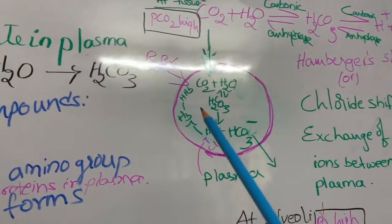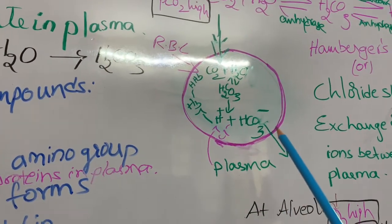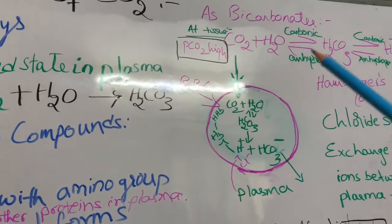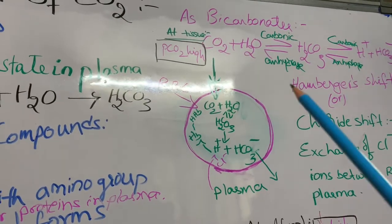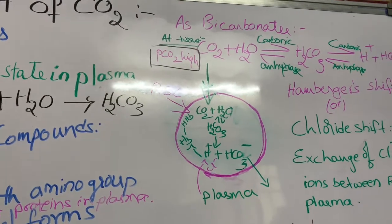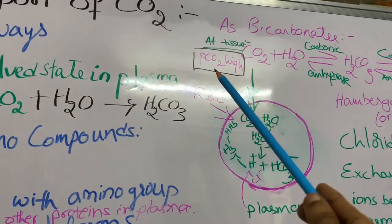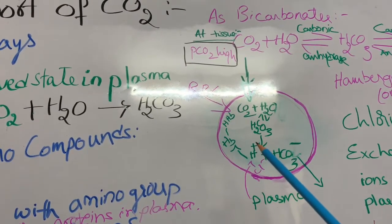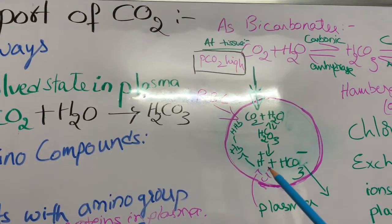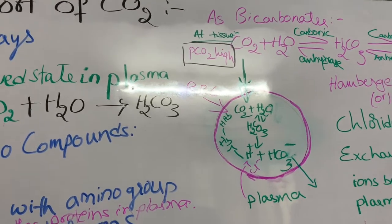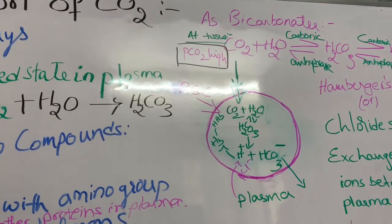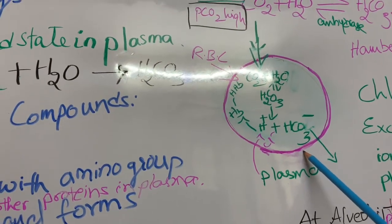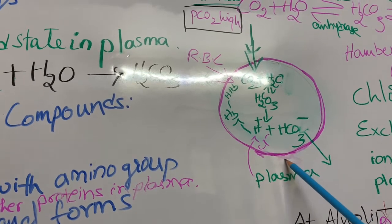The formed carbonic acid (H₂CO₃) is split into hydrogen ions and bicarbonate ions. These are reversible reactions — the forward reaction occurs at the tissue level because the partial pressure of carbon dioxide is very high, causing CO₂ to enter the RBC, form carbonic acid, and split into H⁺ and HCO₃⁻ ions.